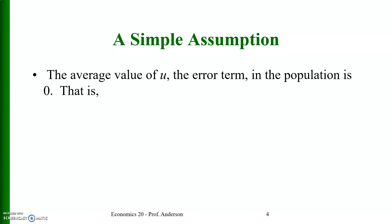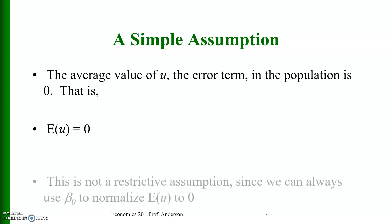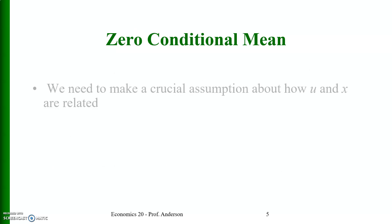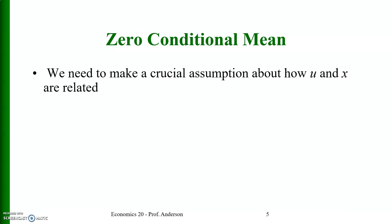A simple assumption: the error term in the population is assumed to have expected value equal to zero — that is, E[u] = 0. This is not a very restrictive assumption because we can always use beta naught to normalize E[u] to zero.